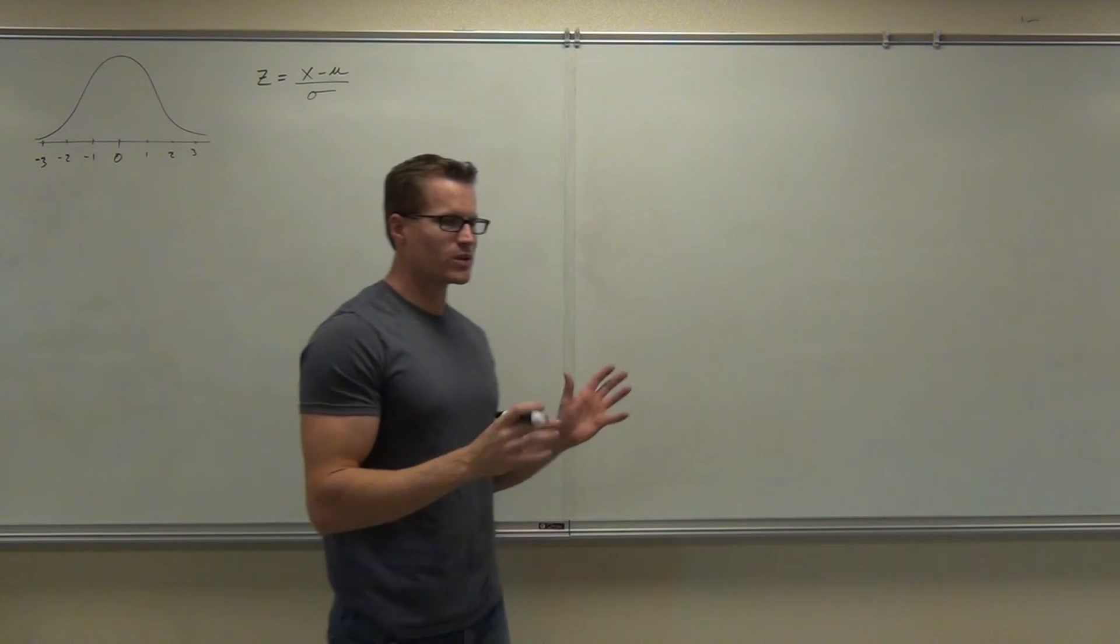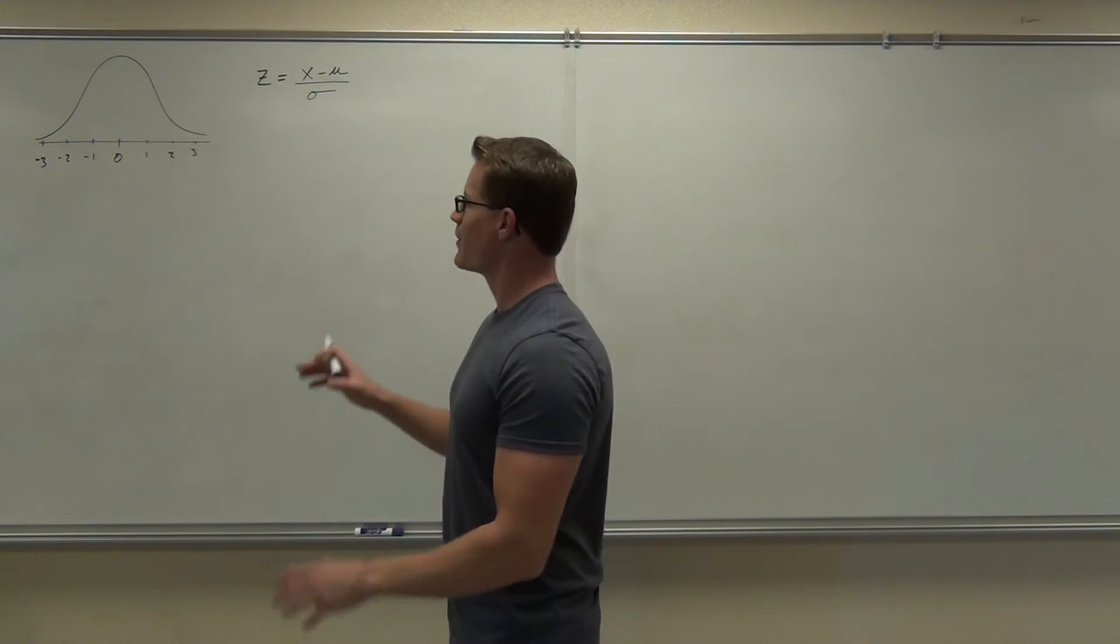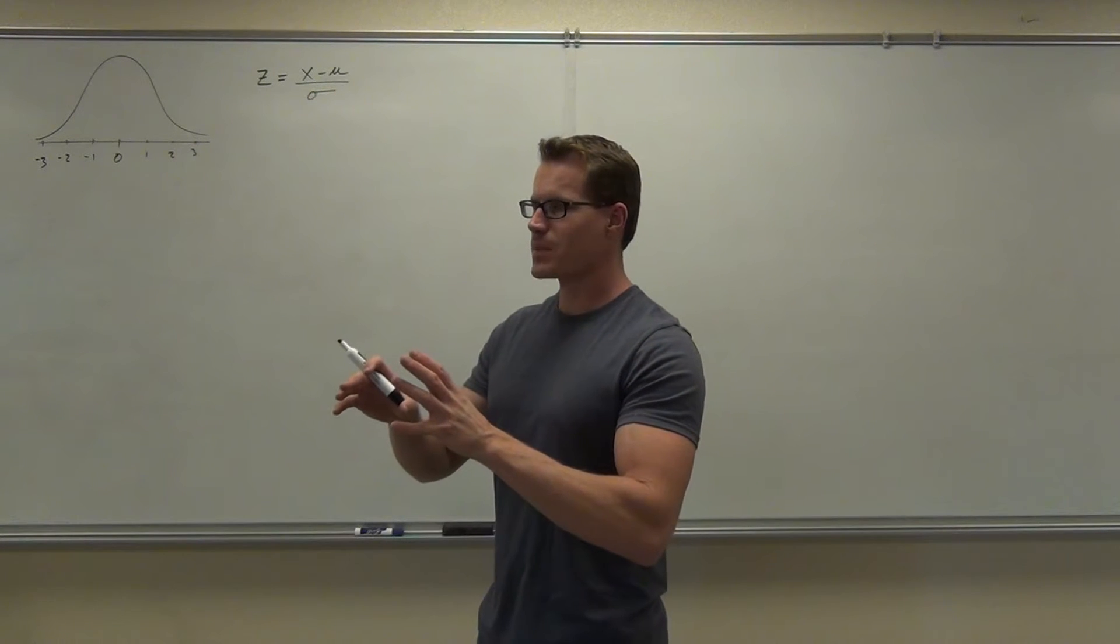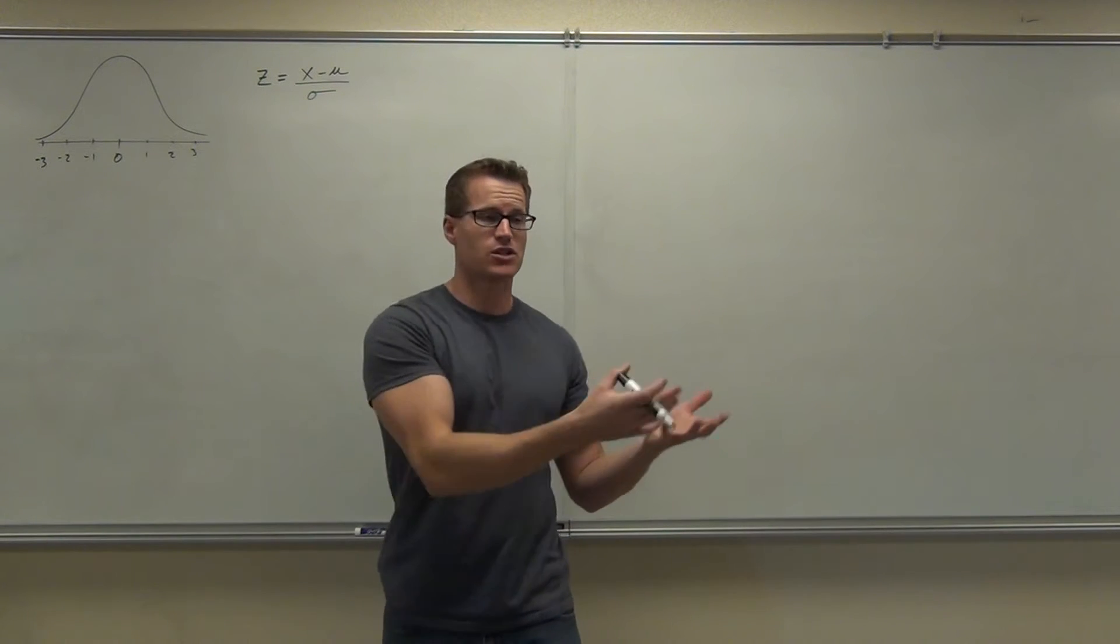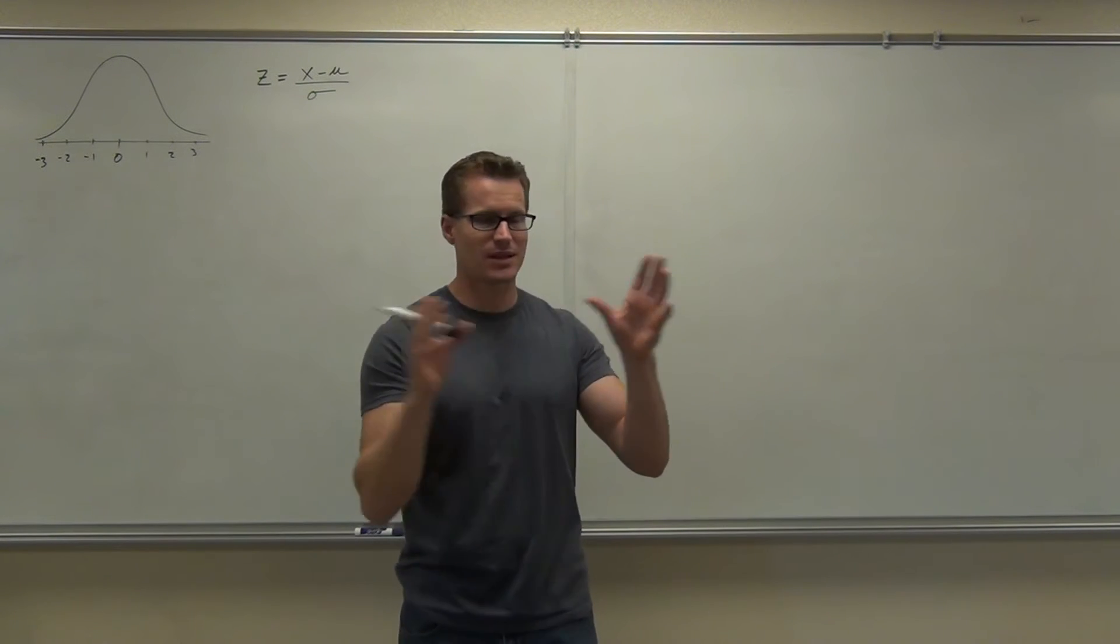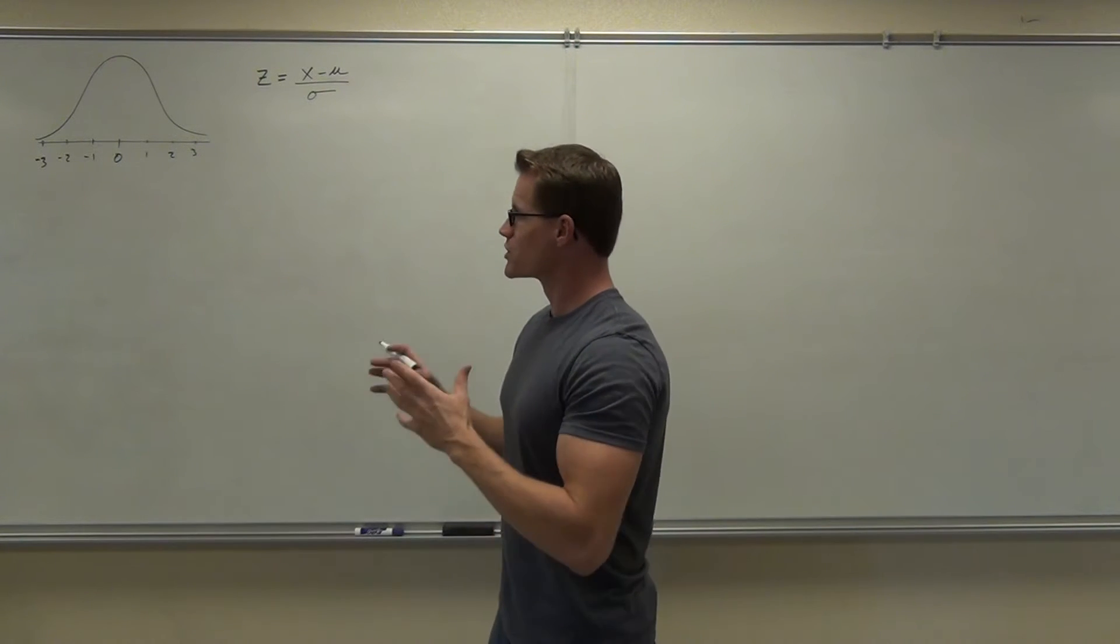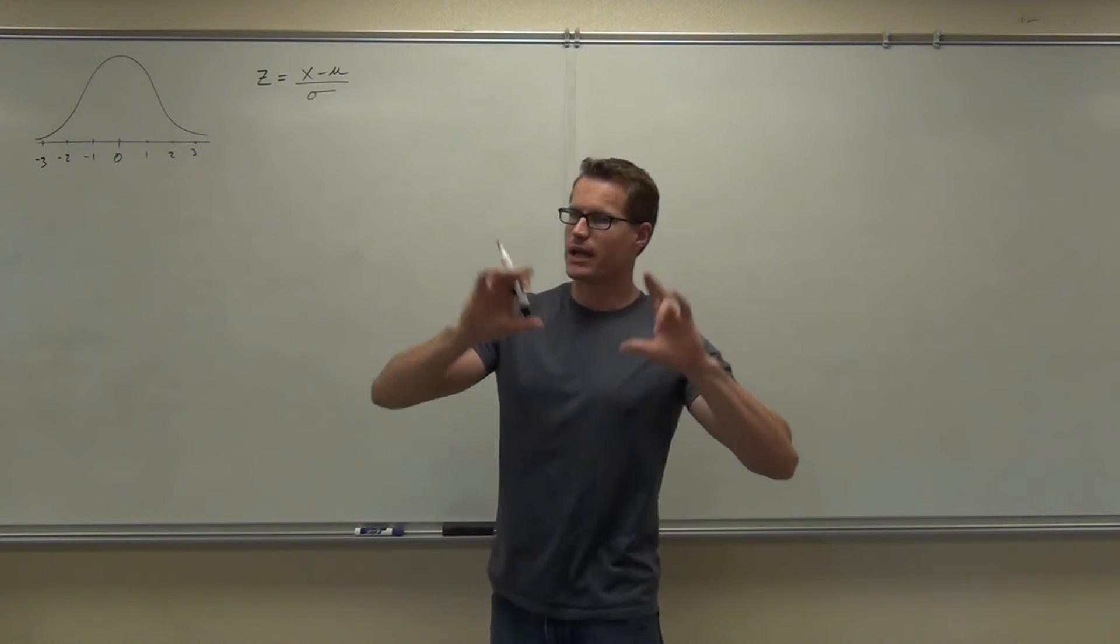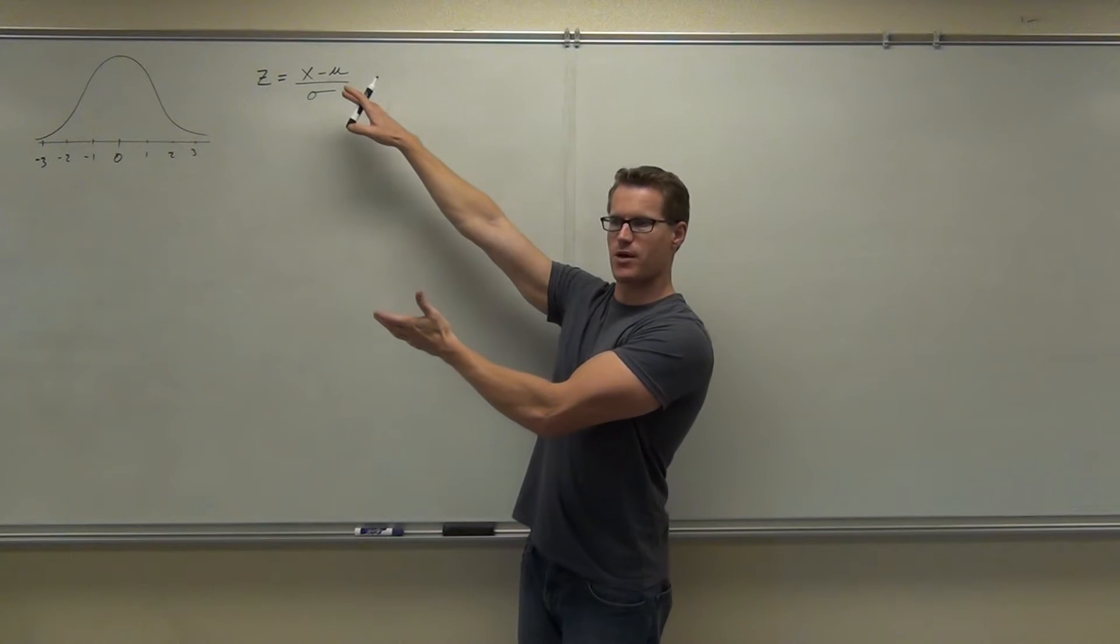We're talking about this thing called a normal distribution, and we realized we get this with continuous random variables. We also understood that there's lots of normal distributions out there for every specific content you're talking about. Like heights, there'd be lots of different distributions of heights depending on your population. What we're doing here is translating any normal distribution into what's called the standard normal distribution. That's where we ended last time.